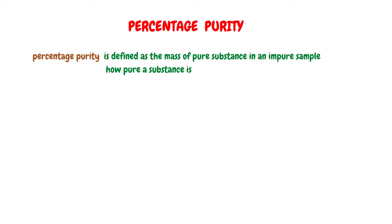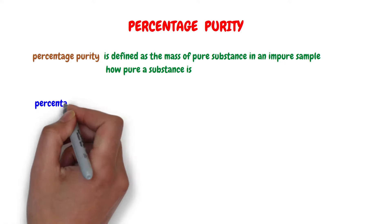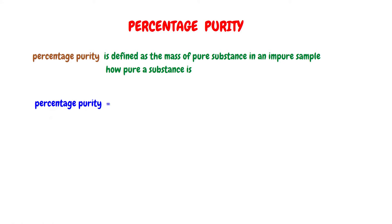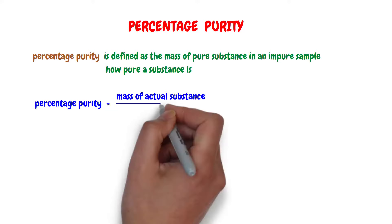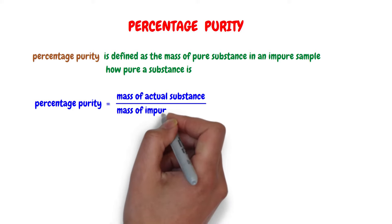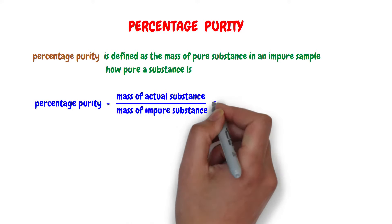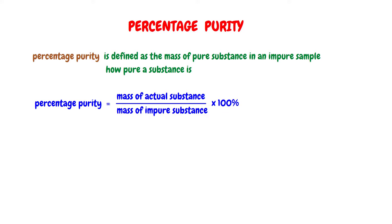The formula for calculating the percentage purity of a substance is: percentage purity equals the mass of the actual substance over the mass of the impure substance, times 100%. Let's consider some examples.